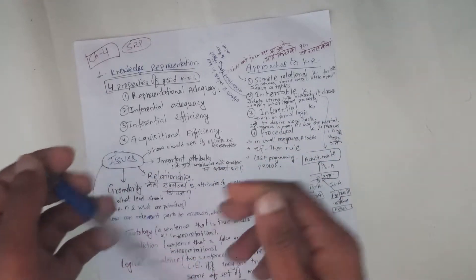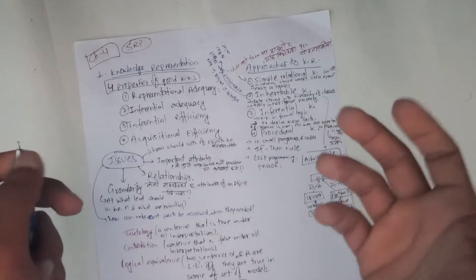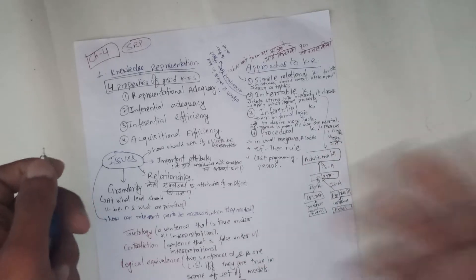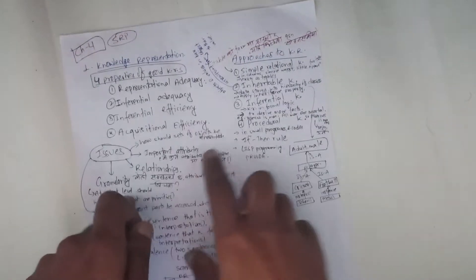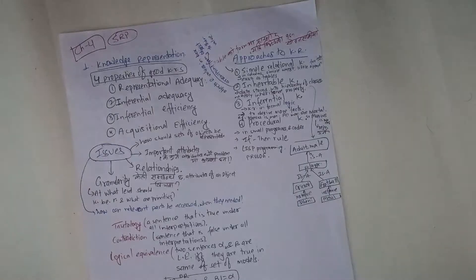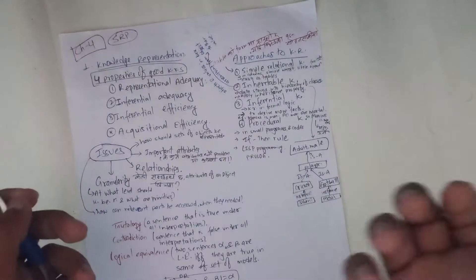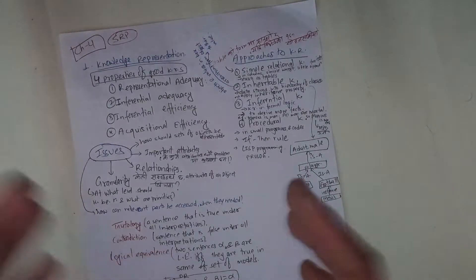There is a lot of information, so inference can be found. Inferential efficiency - the inferential mechanism is effective. New information is available, so you can additionally add.